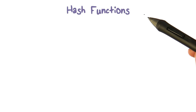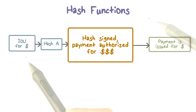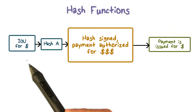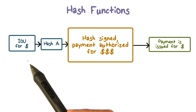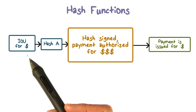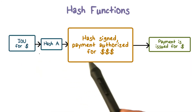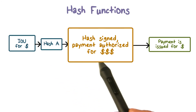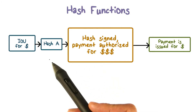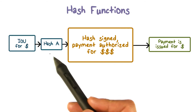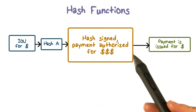Let's take a look at an example. Suppose Bob did some work for Alice and he wants Alice to pay him later. So he can draft an IOU message and ask Alice to sign and then agree to pay for it. To sign the message, Alice will hash the IOU message and then sign the hash using her private key.